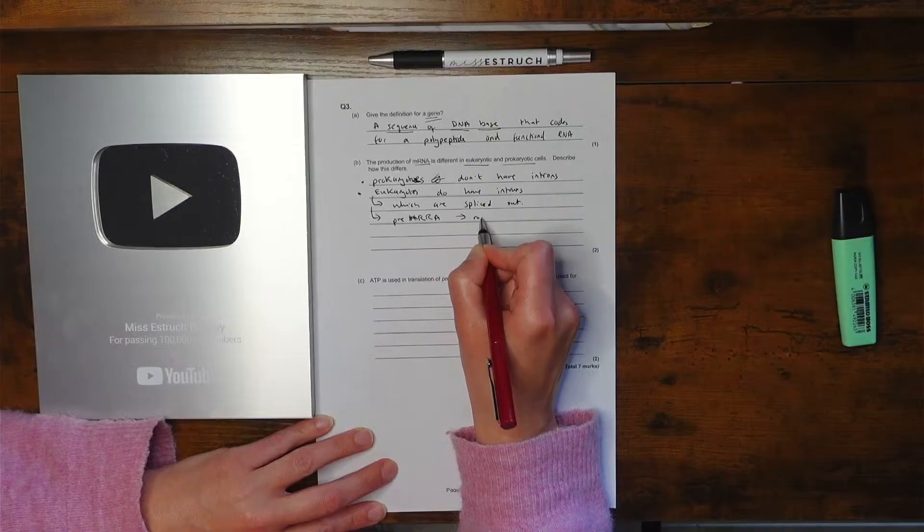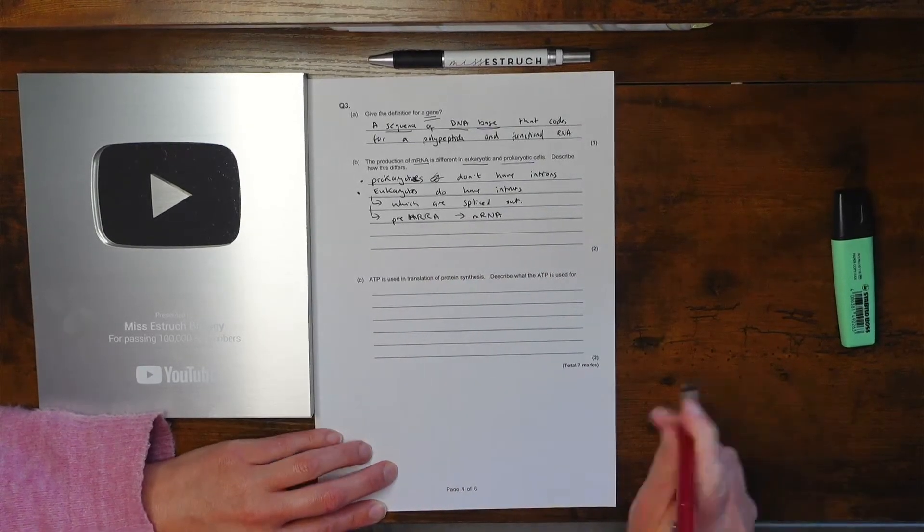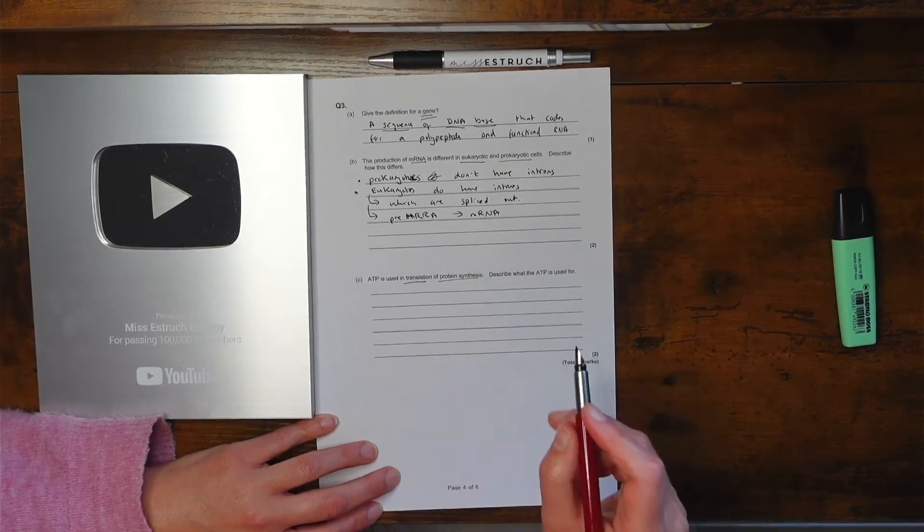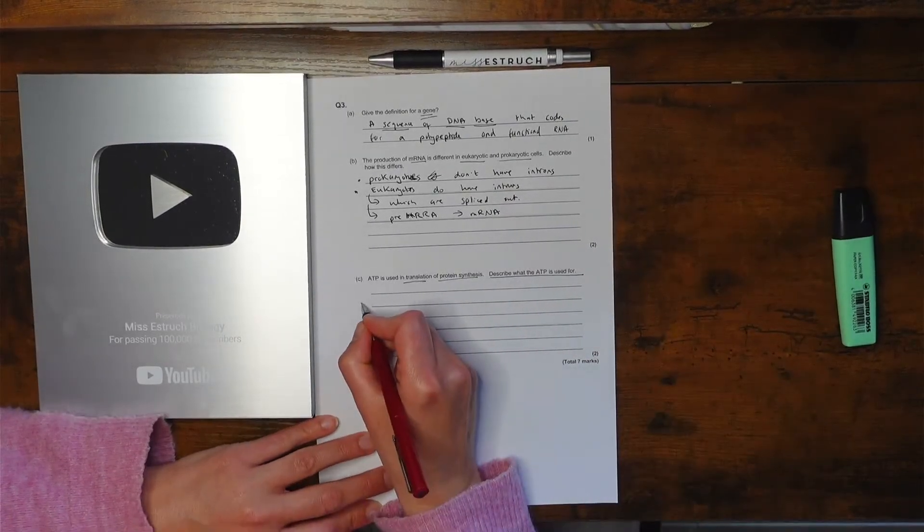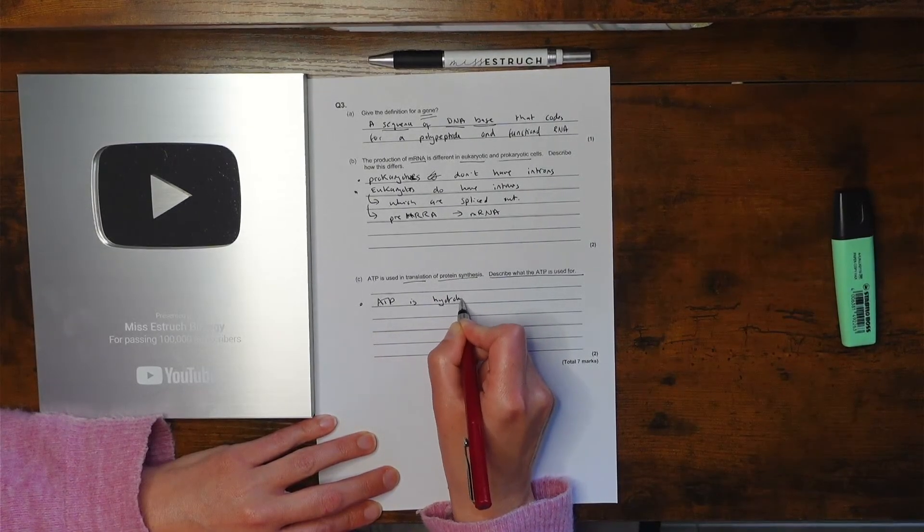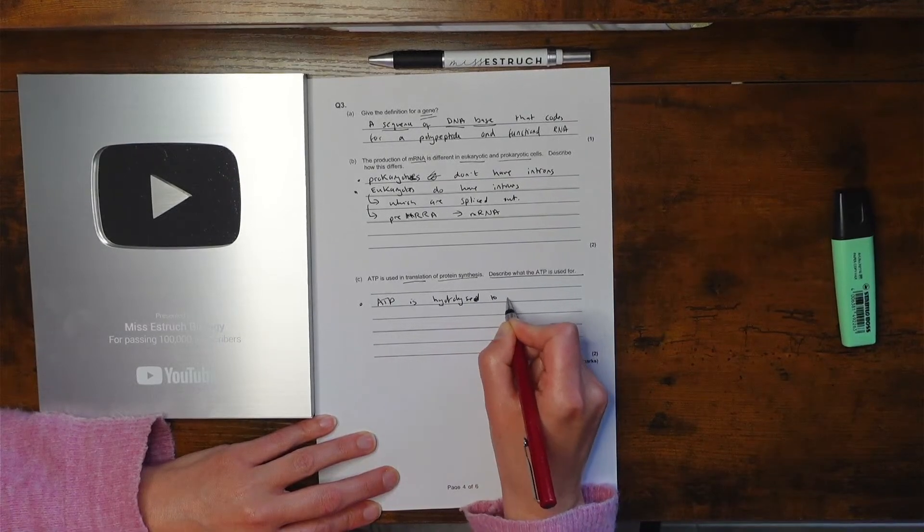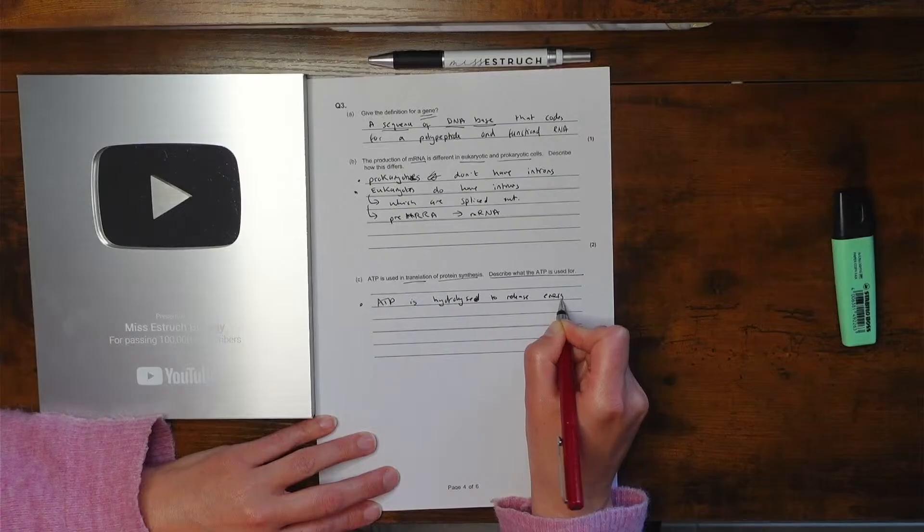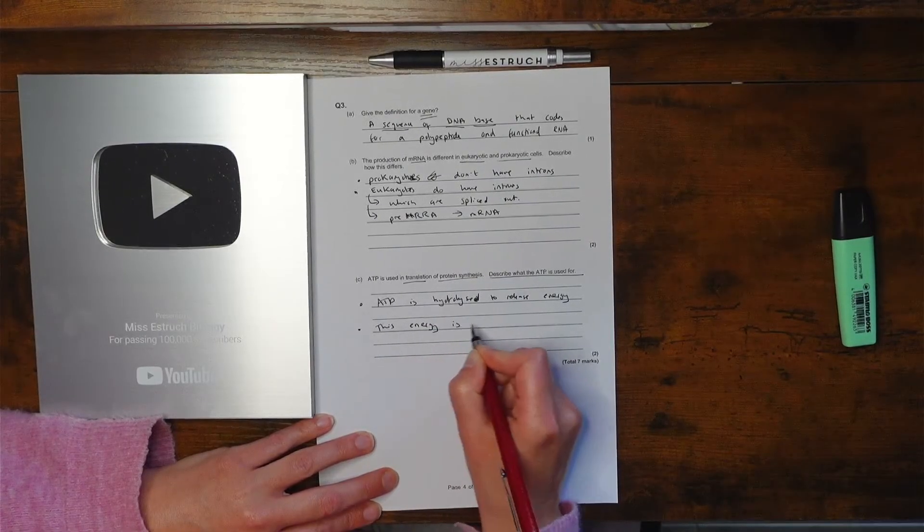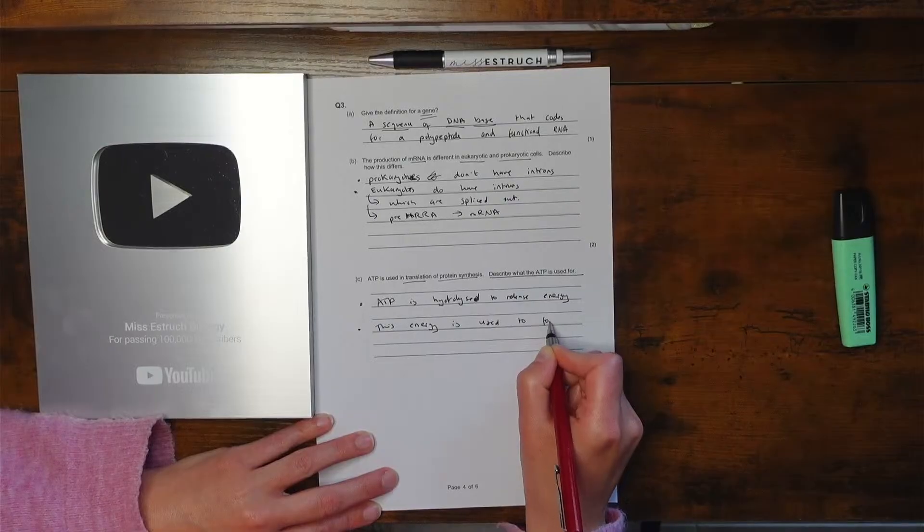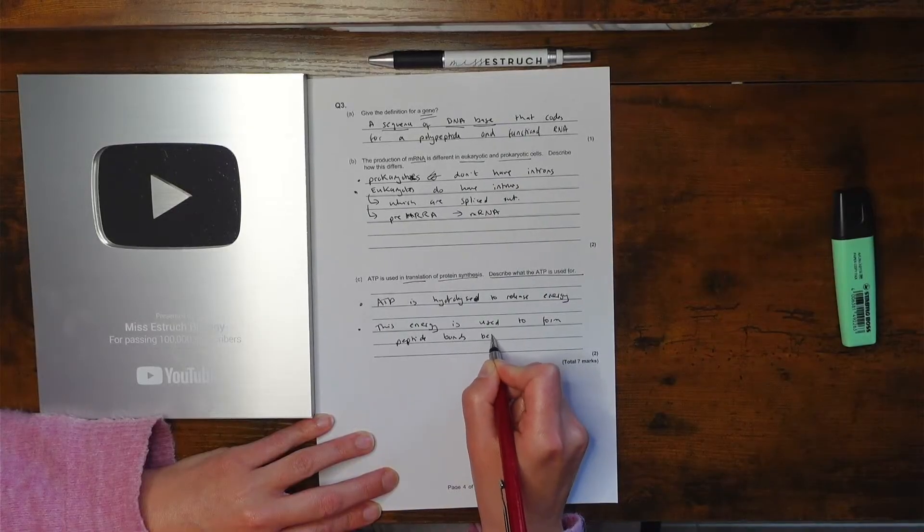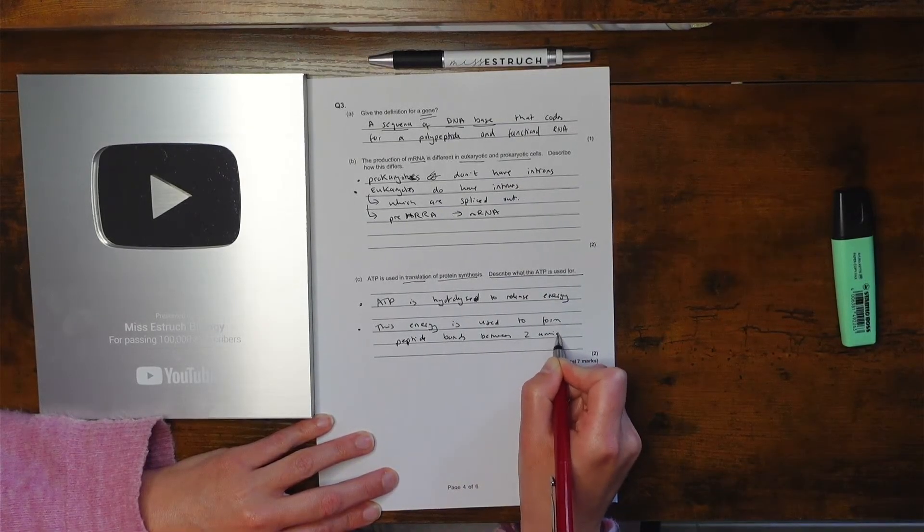Okay, last one for today: ATP is used in translation of protein synthesis. Describe what ATP is used for. Whenever you're asked what ATP is used for, always say ATP is hydrolyzed to release energy, unless it's been used for phosphorylation. And then I'm going to say this energy is used to form peptide bonds between two amino acids.